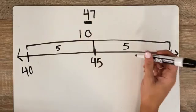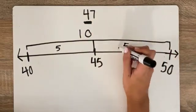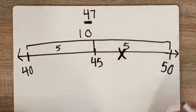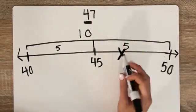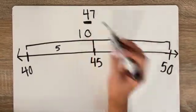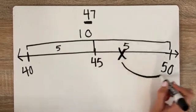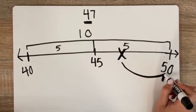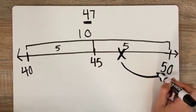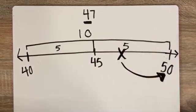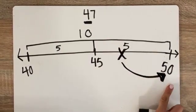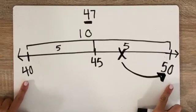Now 47 would fall somewhere over here. So when I round 47 to the nearest 10, I round it to 50 because it's closer to 50 than it is to 40.